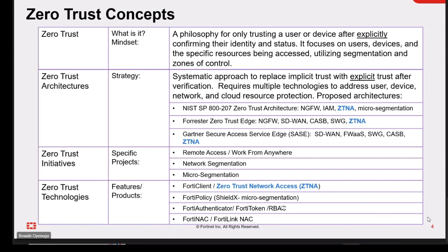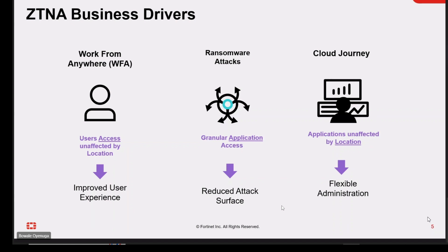The most common reason organizations are looking at ZTNA is to support work-from-anywhere initiatives. After the pandemic, organizations needed to provide safe access to employees working some days in the office and some days at home. They rolled out VPN assets when everyone left the office, and now they are looking for a better long-term solution. Some organizations are also looking for technologies to reduce their risk profile using access checks and segmentation to reduce the attack surface.